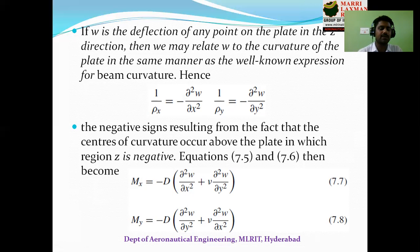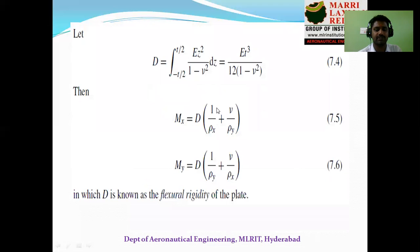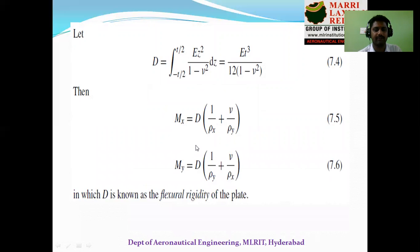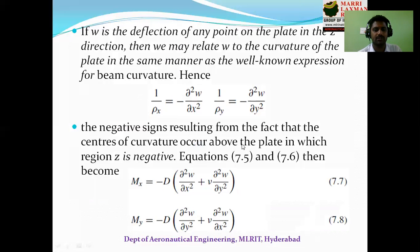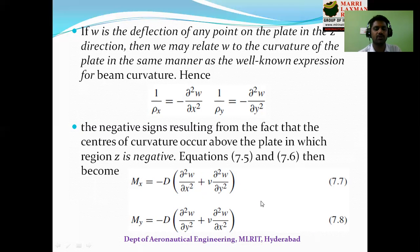Replacing 1/ρx and 1/ρy in the previous equations, we rewrite: Mx = −D · (∂²w/∂x² + ν·∂²w/∂y²) and My = −D · (∂²w/∂y² + ν·∂²w/∂x²).